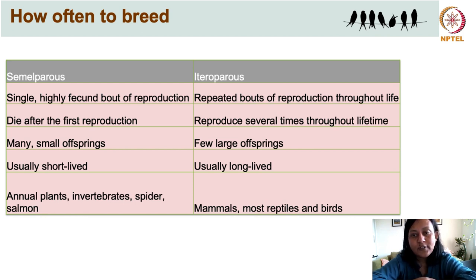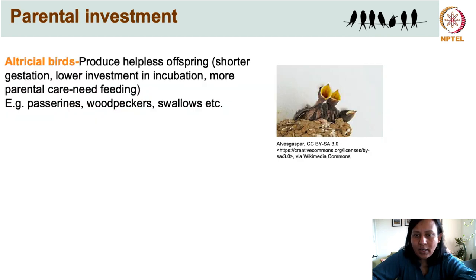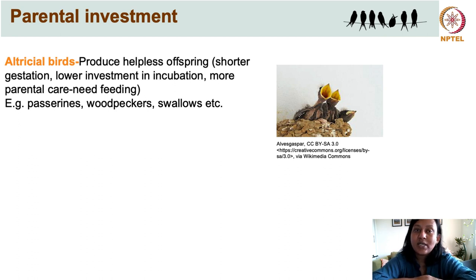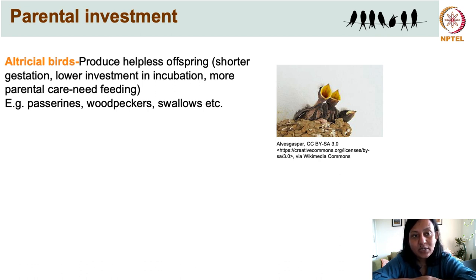Iteroparous species reproduce several times during their lifetime. A few large offspring are produced per episode and these species are usually very long-lived. An adult also has to decide on the amount of energy to invest in caring for the young — known as parental investment — and based on parental investment we have two categories of birds.